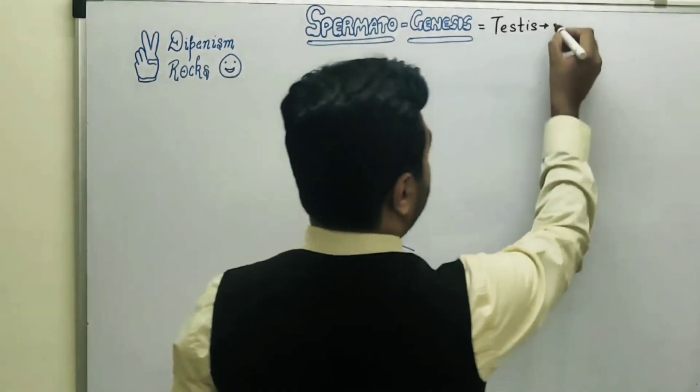To transform spermatids into mature sperm cells, an additional process is required, known as spermiogenesis. Remember: within spermatogenesis, spermiogenesis is the process where spermatids transform into mature spermatozoa — the motile male gametes. During spermiogenesis, the tail and the mitochondrial sheath develop.